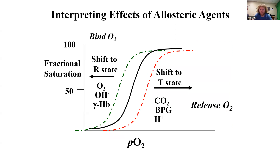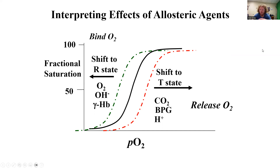One important skill is reading an oxygen binding curve. A shift to the right — toward the red line — represents a shift toward the T-state, releasing O2; BPG, CO2, and protons all do that. A shift to the left stabilizes the R-state; O2, a more basic environment, and certain forms of hemoglobin cause that. Understanding these shifts is key to interpreting hemoglobin function.